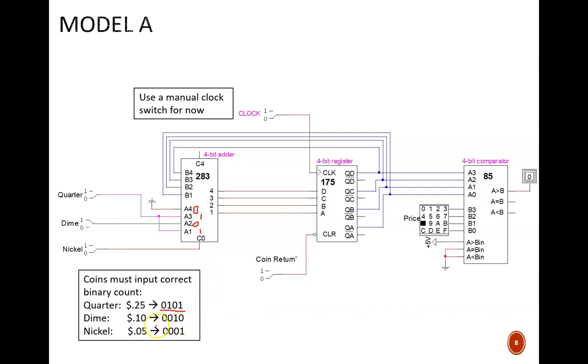Similarly, a dime needs to add decimal 2 or binary 0010. Thus, only port A2 is activated.